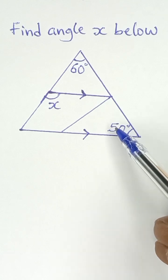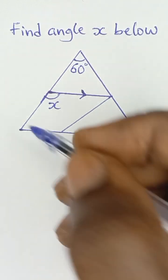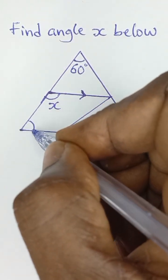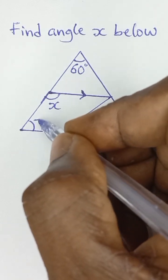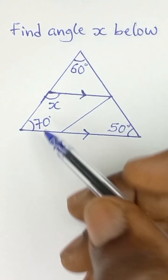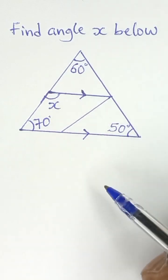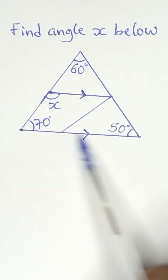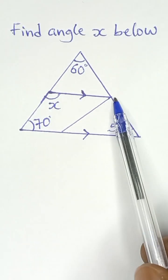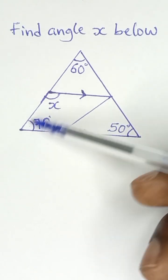110. 110 subtracted from 180 will give us this angle as 70 degrees, so that 70 plus 50 plus 60 is 180. Sum of angles in a triangle. Now this line is parallel to this line and these two angles